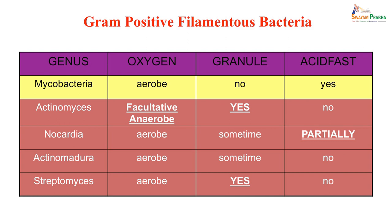Nocardia is partially acid fast while the others are not acid fast. All this is compared to mycobacteria, which is an aerobe and which is an acid fast organism.